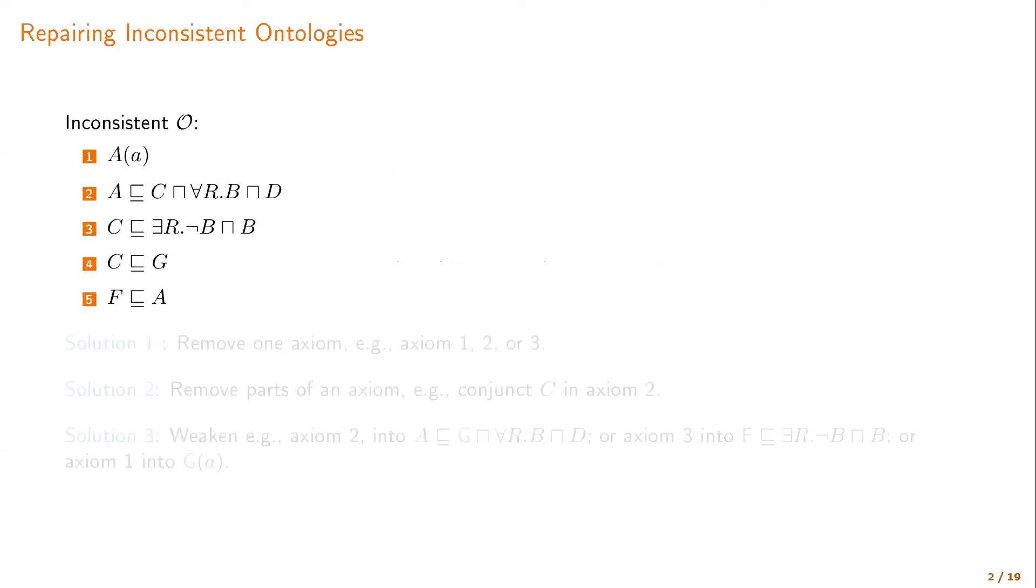So what is the scenario we are talking about? Let's take an inconsistent ontology like this one. This ontology is inconsistent because it is saying that A is not empty. The concept A is not empty, but A is subsumed by C and C must be empty because it is subsumed by exists R not B and B.